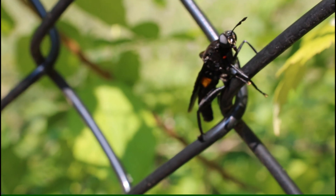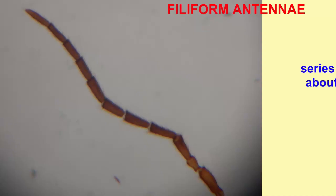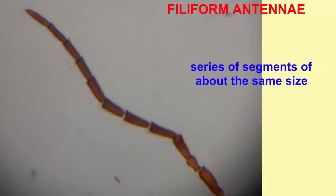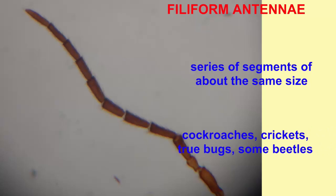Filiform antennae are composed of a series of segments of about the same size. This type of antennae is found in diverse insects, such as cockroaches, crickets, true bugs, and some beetles.